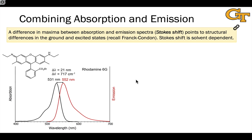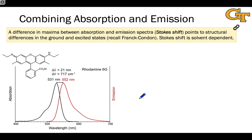When we look at absorption and emission spectra together, some interesting phenomena become apparent. Very often, absorption and emission spectra have a mirror image structure, particularly when the structures of the ground and excited states are very similar. Naively, we would expect the wavelengths of maximum absorption and emission to be the same, since the 0-0 transition has the same energy going up or going down. However, this is commonly not observed in practice — there's a Stokes shift from the absorption wavelength maximum (531 nm for rhodamine 6G) to the emission wavelength maximum (552 nm), pointing to structural differences between ground and excited states.